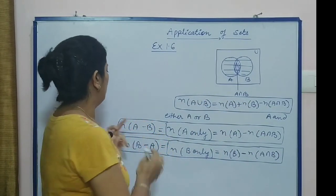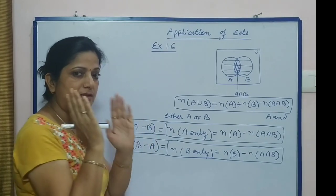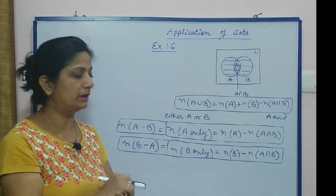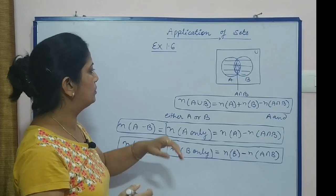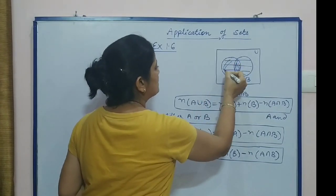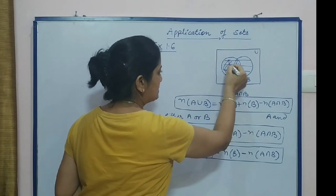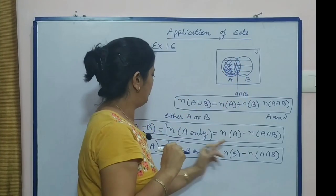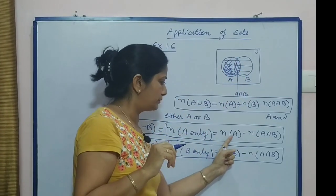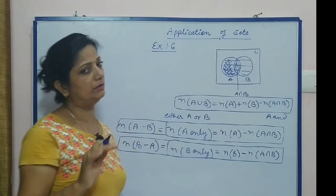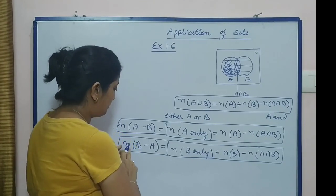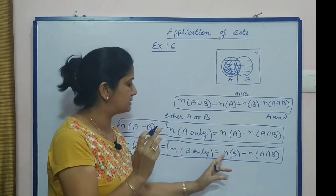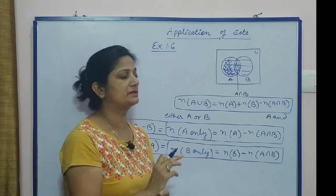Number of A minus B is the same as number of set A only. When we need to find A only or A minus B, that equals only A — meaning when we separate the intersection from set A, we get A only. That means number of A minus number of A intersection B. In the same way, number of B minus A equals number of B minus number of A intersection B.